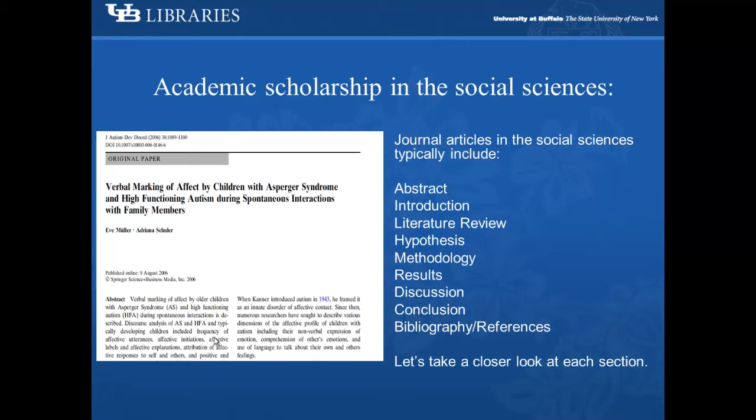Journal articles in the social sciences typically include an abstract, introduction, literature review, hypothesis, methodology, results, discussion, conclusion, and bibliography or list of references. Let's take a closer look at each section.